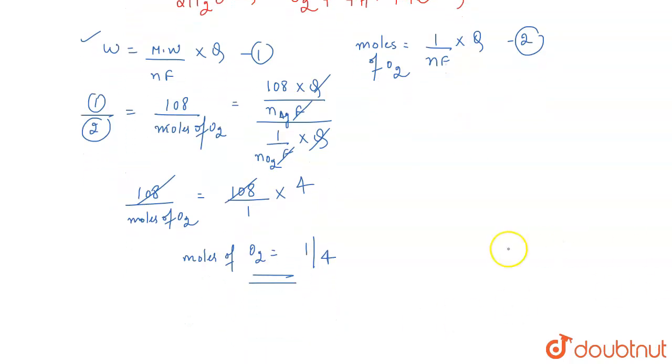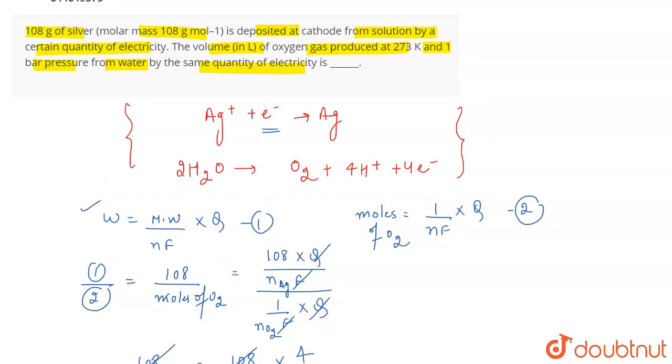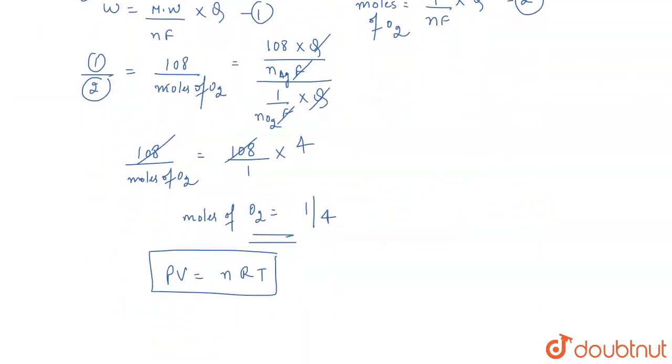So, you have to calculate the volume in liters. Now, according to the ideal gas equation, PV is equal to nRT where N belongs to the number of moles. Now, in the question, you are given the pressure, you are given the temperature. You are given temperature 273, pressure 1 bar.